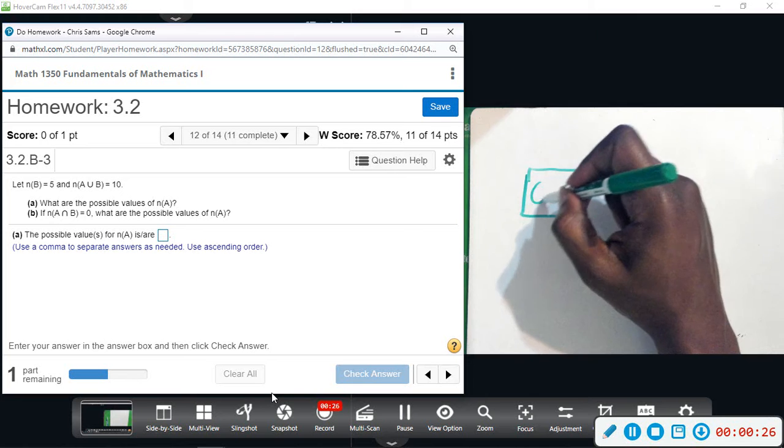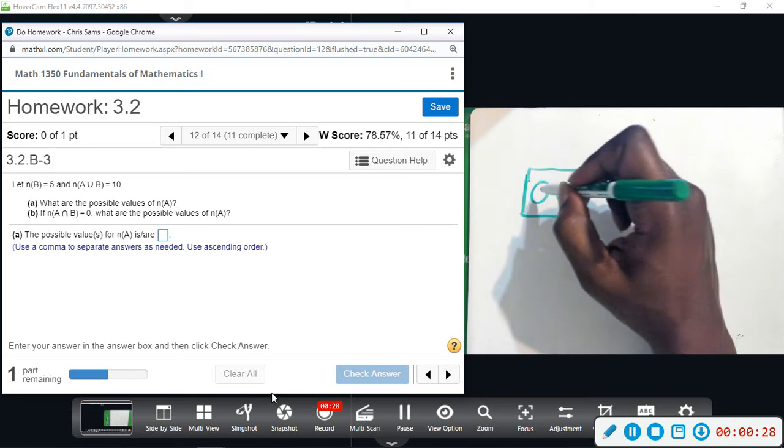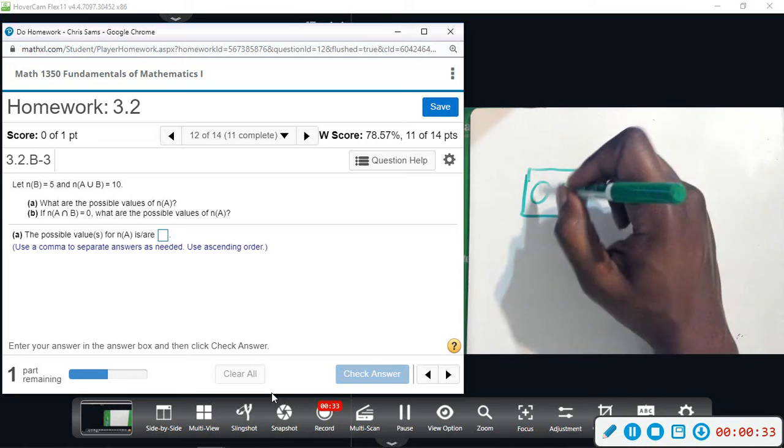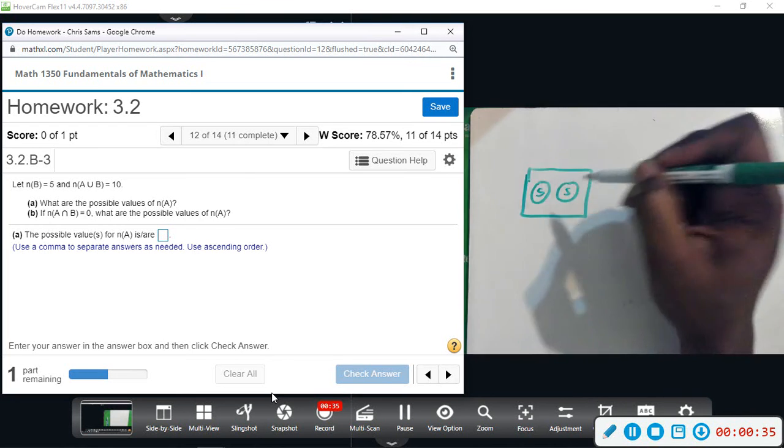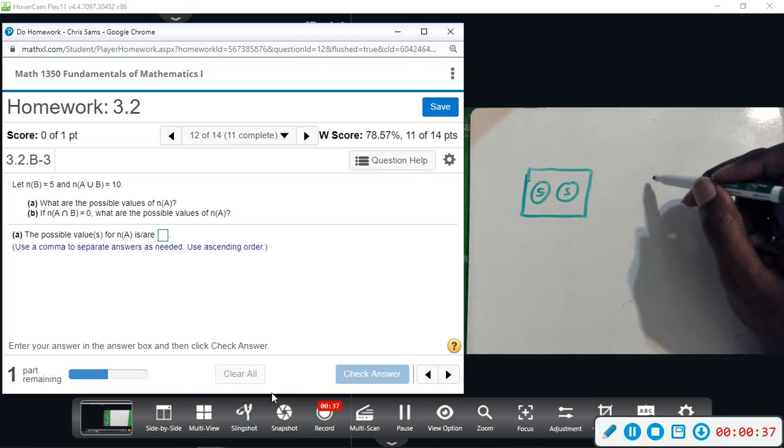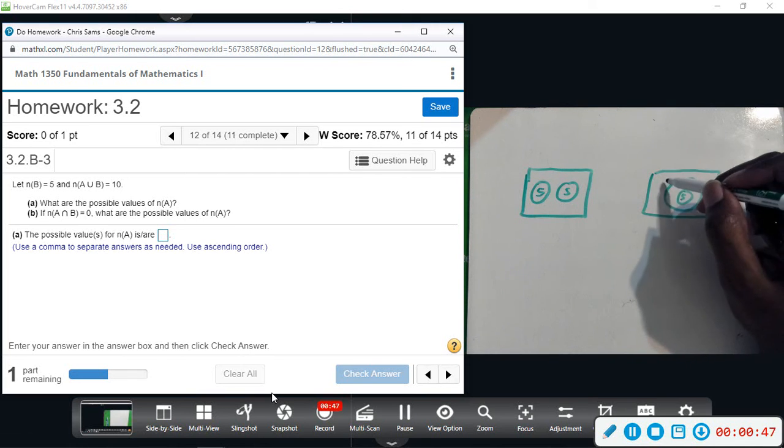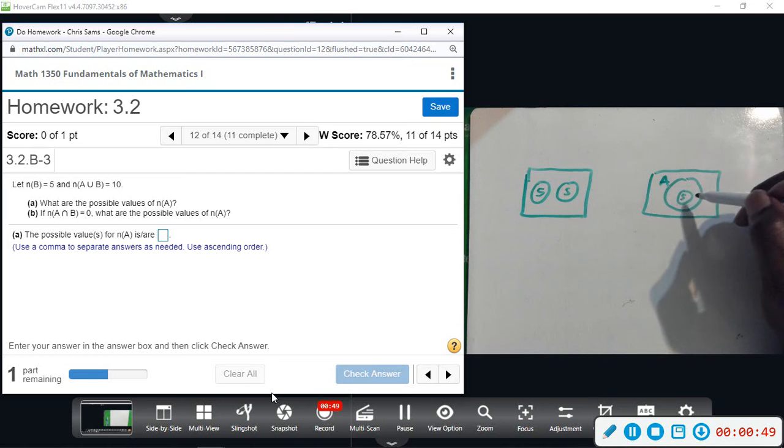Remember we talked about there's a couple different scenarios. These two could be completely disjoint sets. Say this one had five elements and in order for them to total 10, this one had to be five. There was a case to where one set could be completely engulfed in the other set. So that five elements, meaning if this is A this time and this is B, that A has 10 elements in it and five of those elements are coming from B and A has an additional five, so all together 10.